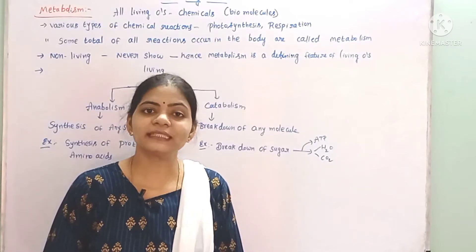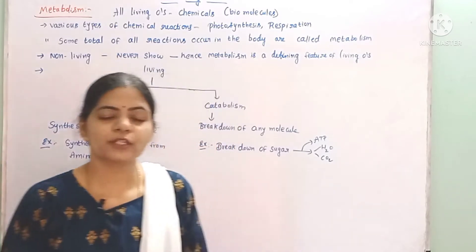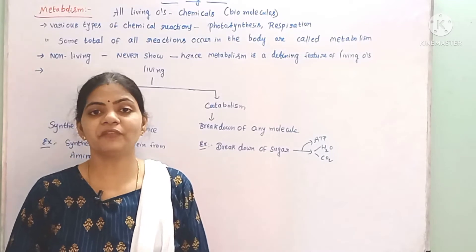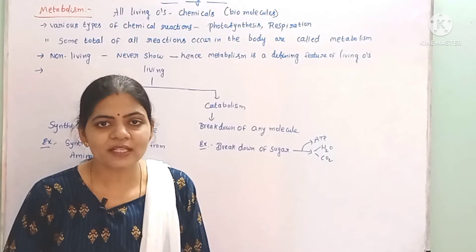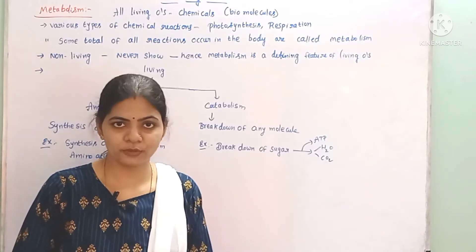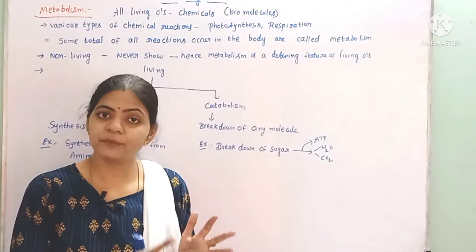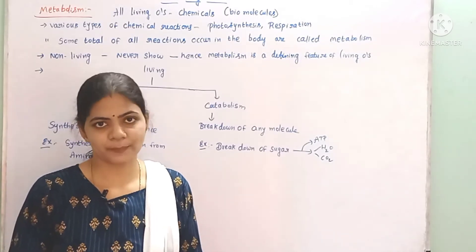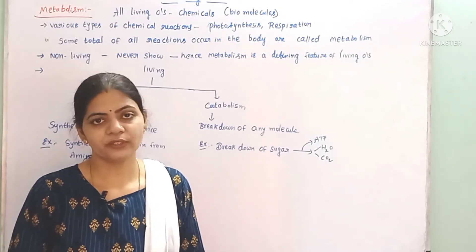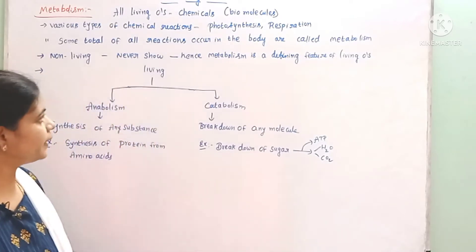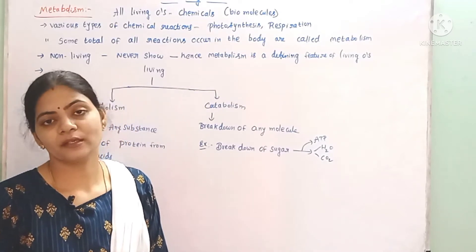The next character of living organisms is metabolism. The body of all living organisms is made up of several chemical substances called biomolecules. These biomolecules are constantly synthesized and at the same time broken down into simpler substances. Several chemical reactions occur in the body of living organisms, like photosynthesis and respiration.